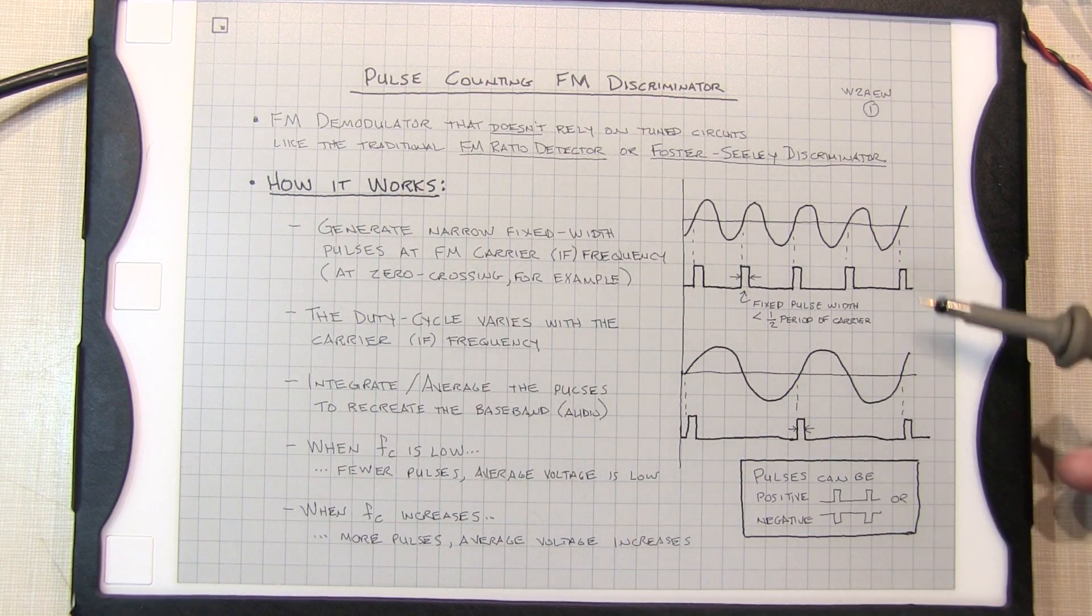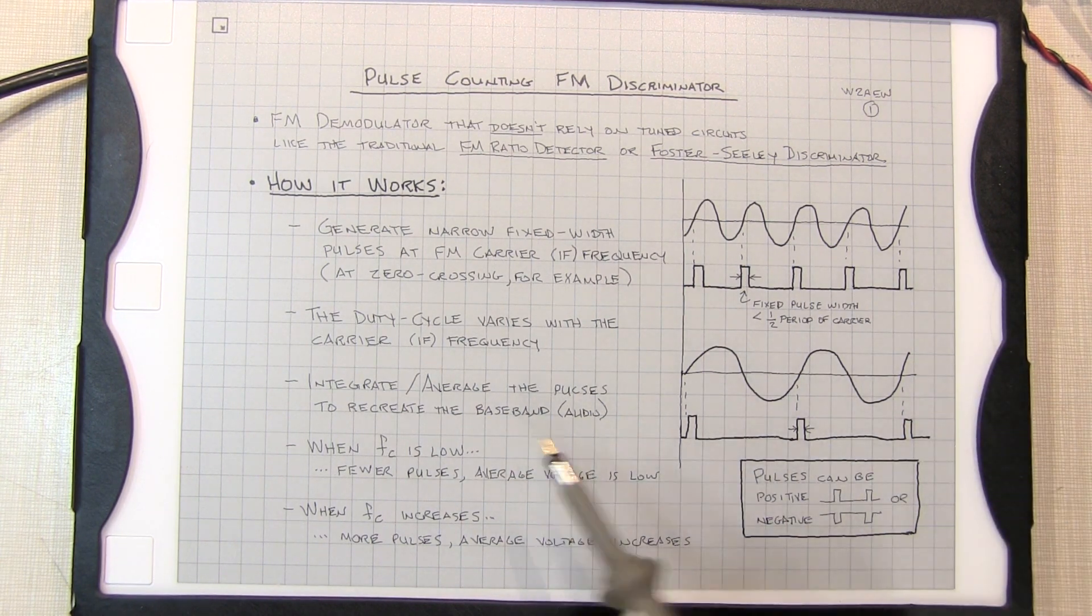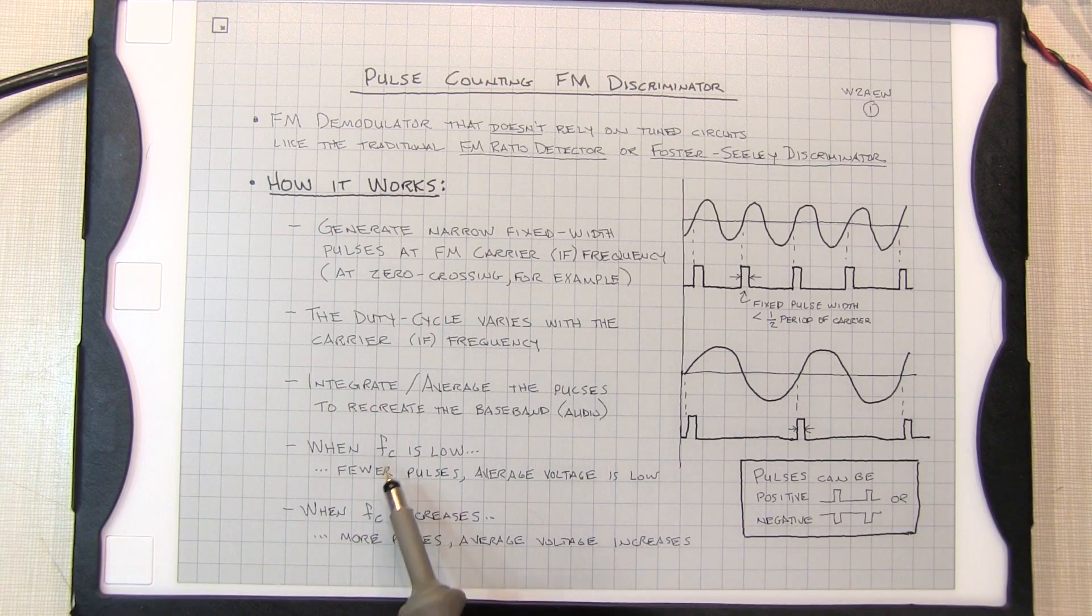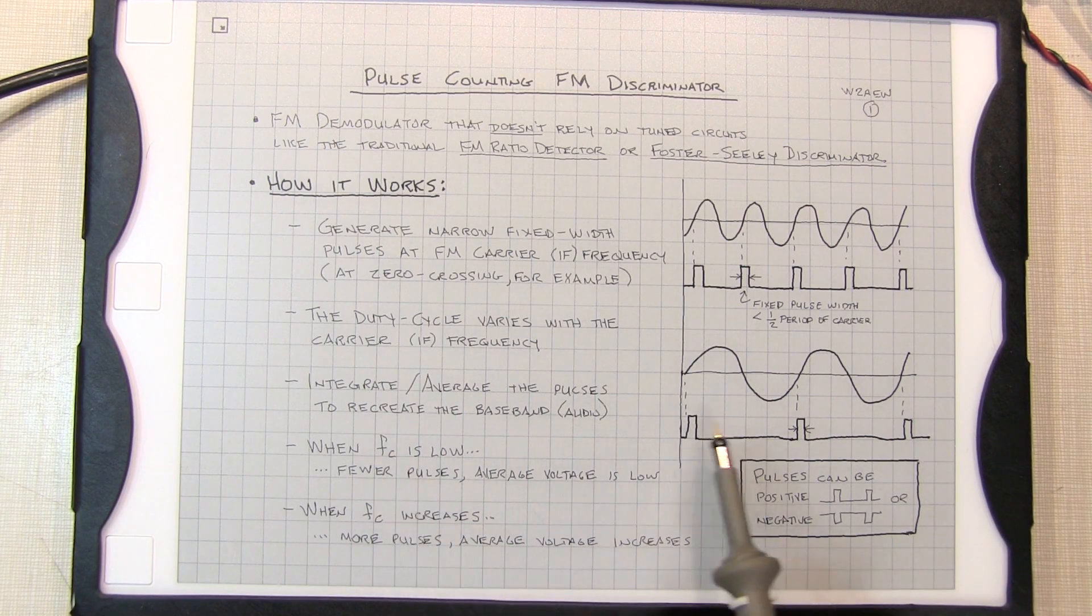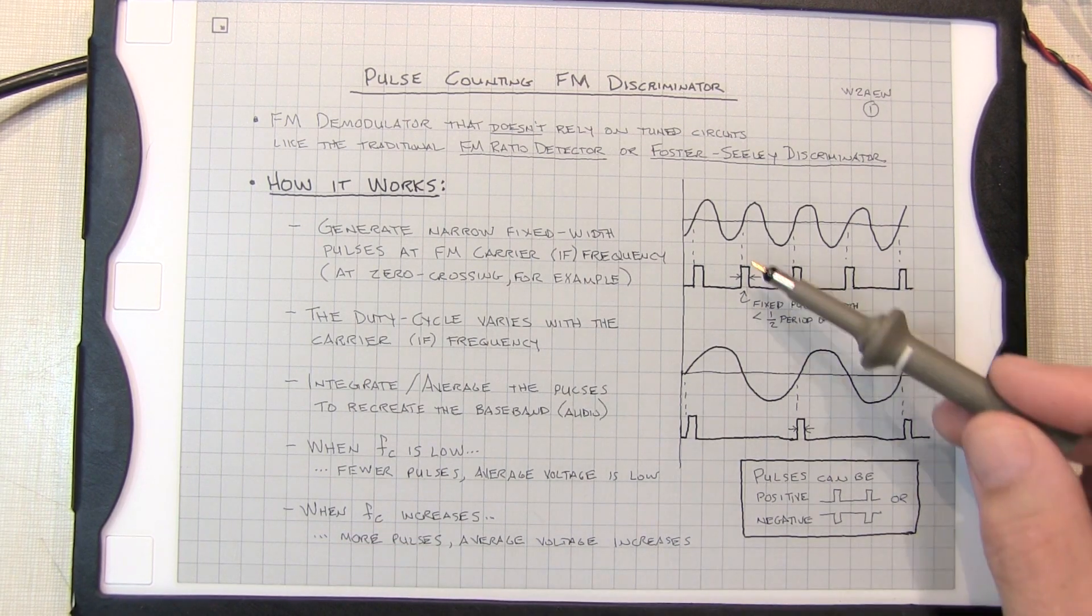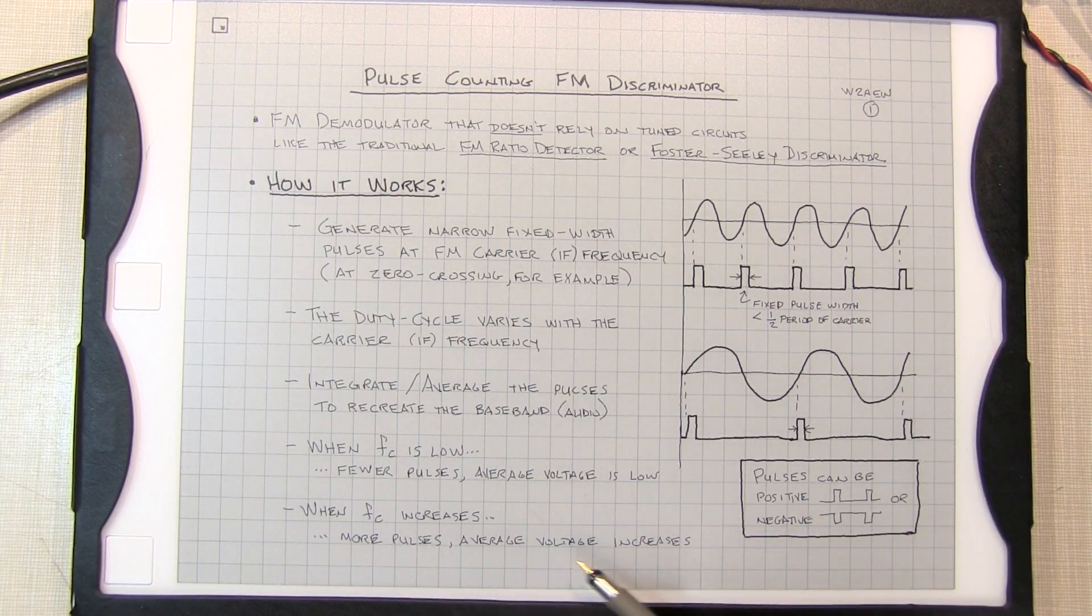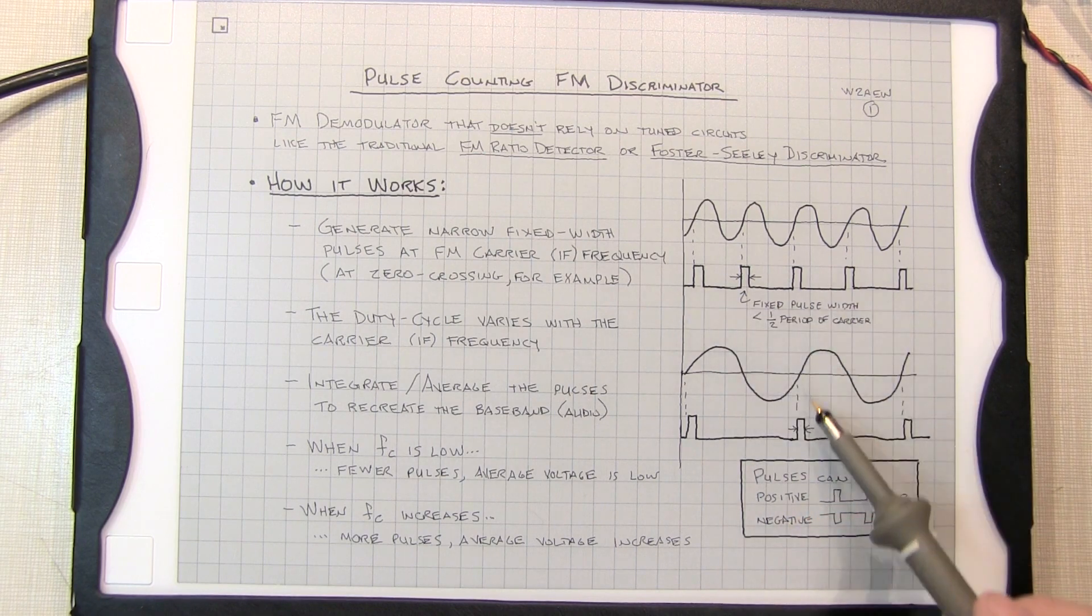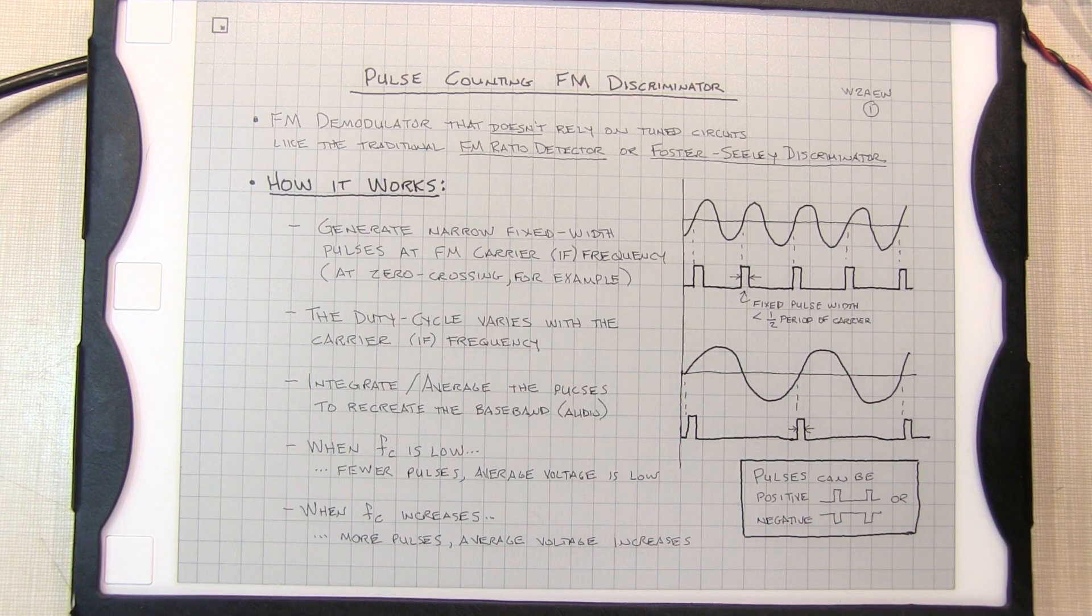So therefore the average of this voltage is essentially going to be the baseband or in our case the audio. So when the carrier frequency is low we've got fewer pulses, the average is lower. When the carrier frequency increases we've got more pulses and because these pulses again are all fixed width, the average voltage here is higher.